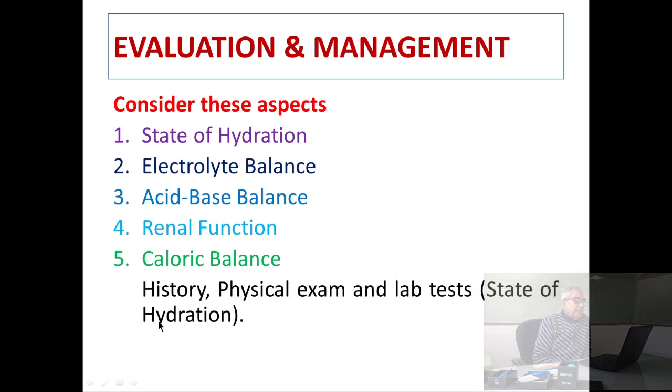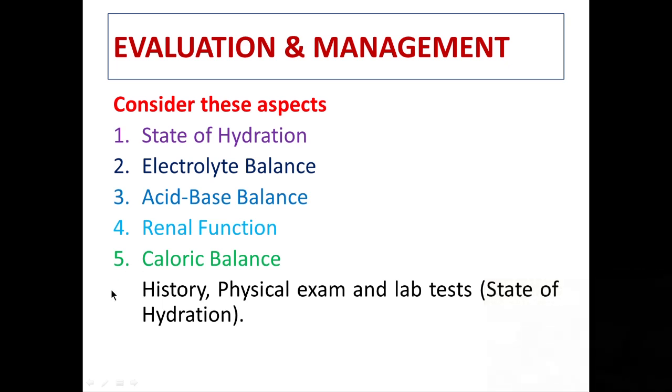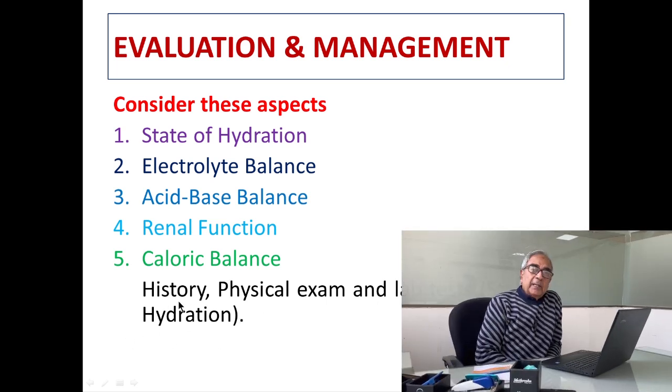As far as the state of hydration is concerned, we can assess it through history, physical examination, and laboratory tests. From history, the owner may tell us that the animal has been vomiting or having diarrhea for the last several days. On that basis, we can guess what type of acid-base abnormality the animal is suffering from.